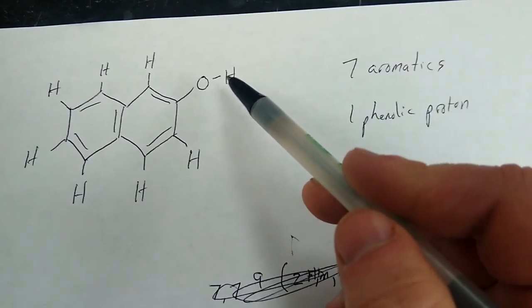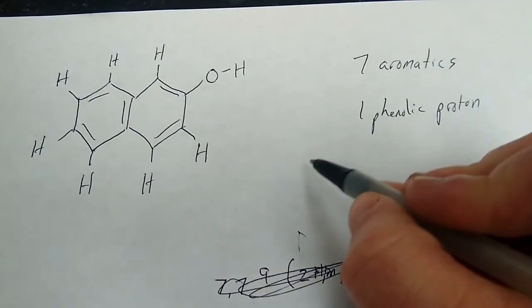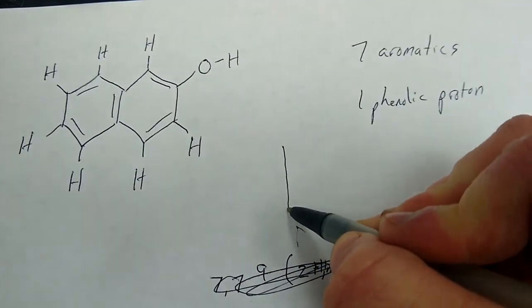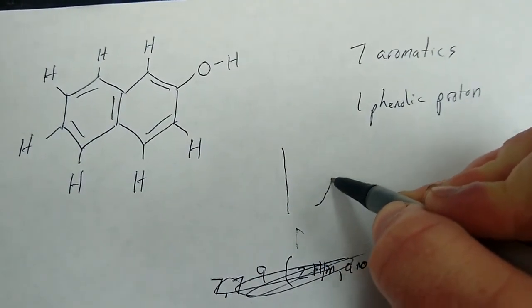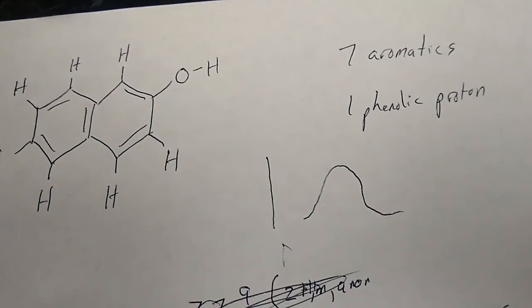Additionally, the OH signal, instead of it, you won't always see a big sharp signal like that. It may be broad and drawn out like that, and that's just hydrogen bonding related.